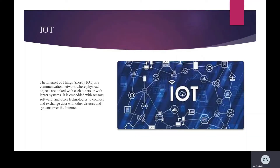Firstly, I want to talk about the Internet of Things. The Internet of Things, shortly IoT, is a communication network where physical objects are linked with each other or with larger systems. It is equipped with sensors, software and other technologies to connect and exchange data with other devices and systems over the Internet.